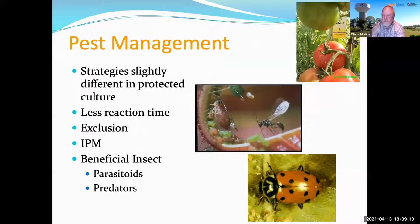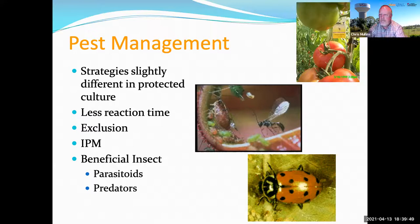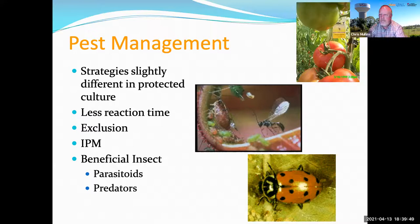You'll exclude some pests naturally, but in greenhouses and high tunnels you're going to see things like spider mites, aphids, and whiteflies because it's a lush growing environment and plants are in there early. However, there's also the possibility of using beneficial insects — predators and parasitoids — to help keep those pest populations in check.